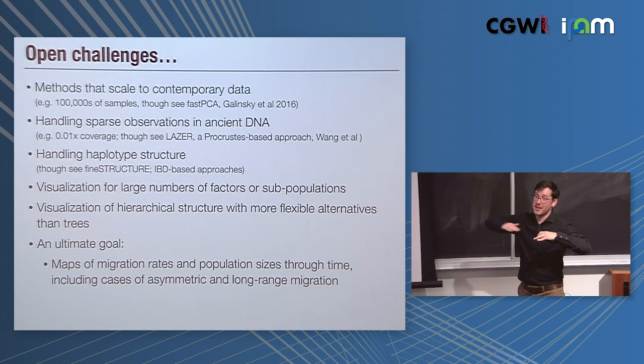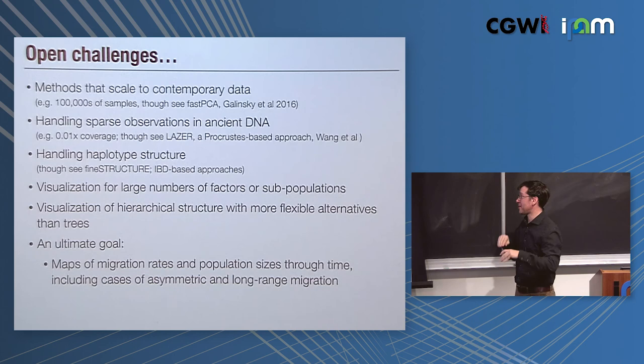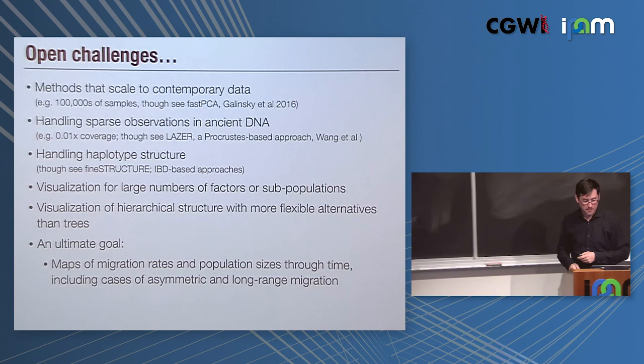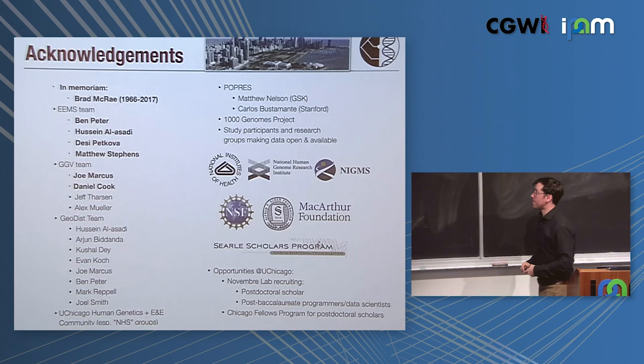How do we visualize large numbers of factors or subpopulations? How do we deal with hierarchical structure with more flexible alternatives and trees? An ultimate goal that we think is exciting is trying to make these maps of migration rates and population sizes through time, including cases of asymmetric and long-range migration. These are some of the limitations that EAMS has right now. It's one map, it doesn't do long-range migration, it doesn't do asymmetric migration, but if we could do all that, it would be amazing, though challenging. So I think, yeah, Brad again for that innovation of this resistance distance. The EAMS team is Ben, postdoc, Hussein, a student working on extensions, Desi who did the lead work in developing it, and Matthew, key collaborator on it. So that's it, thank you, and sorry for running a little late.